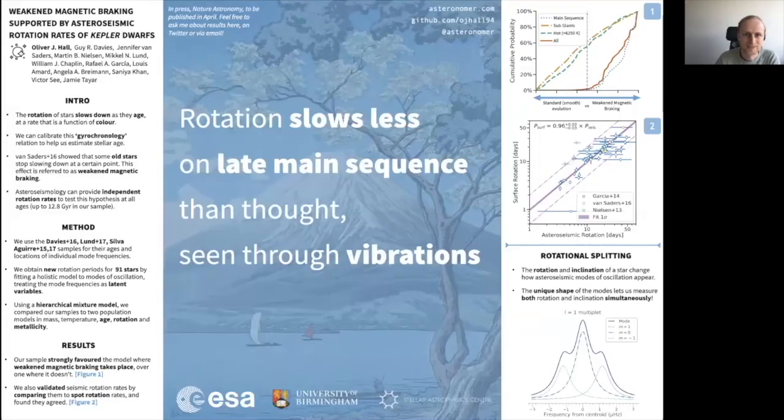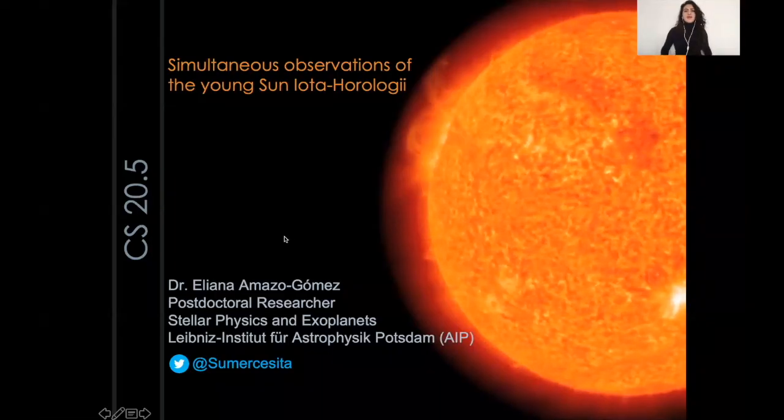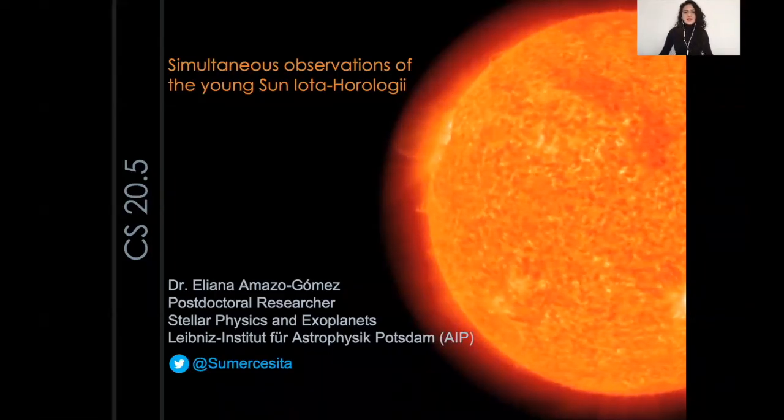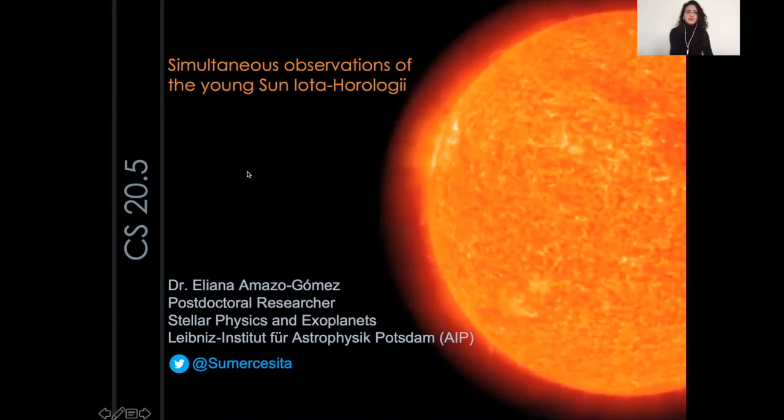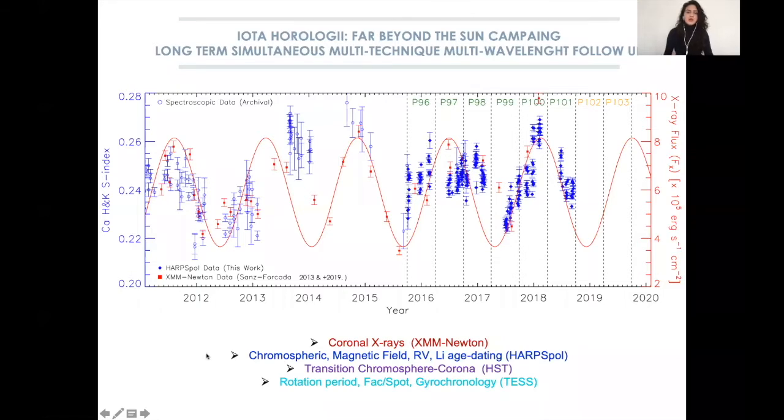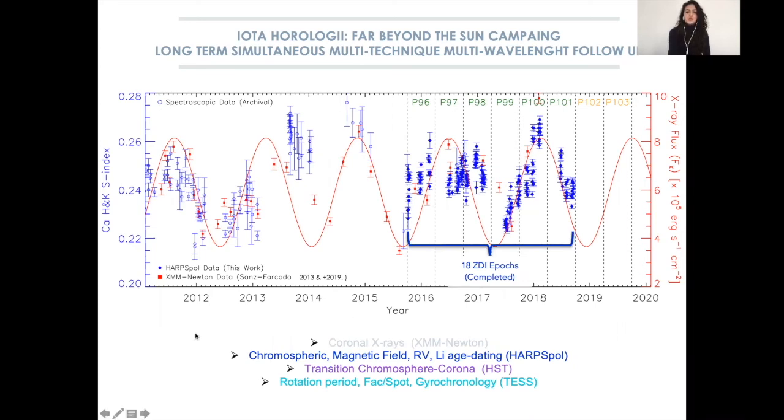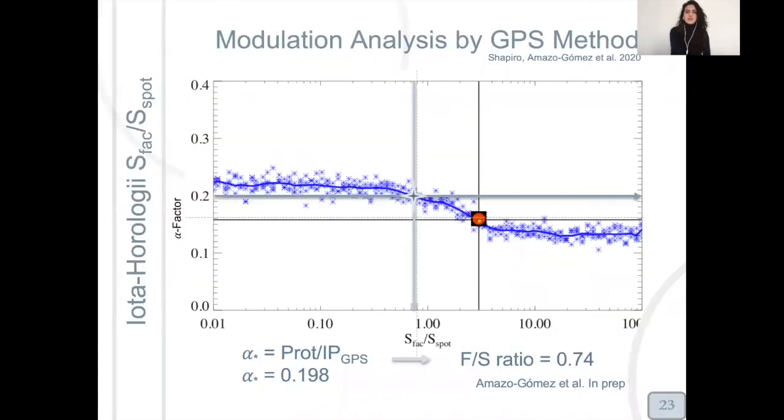Hello everyone, I am Eliana Maso. I am a postdoctoral researcher at the AIP Institute in Potsdam. This is the analysis of simultaneous observations of the young star Iota Horologii, a star with one of the shortest X-ray cycles and a long-term follow-up in spectroscopic data from the Far Beyond the Sun campaign. We obtained around six semesters of observations with HARPS, also two observations using HST, and we complemented our analysis using TESS photometry with that photometry and a GPS method that is available in Shapiro et al. 2020.